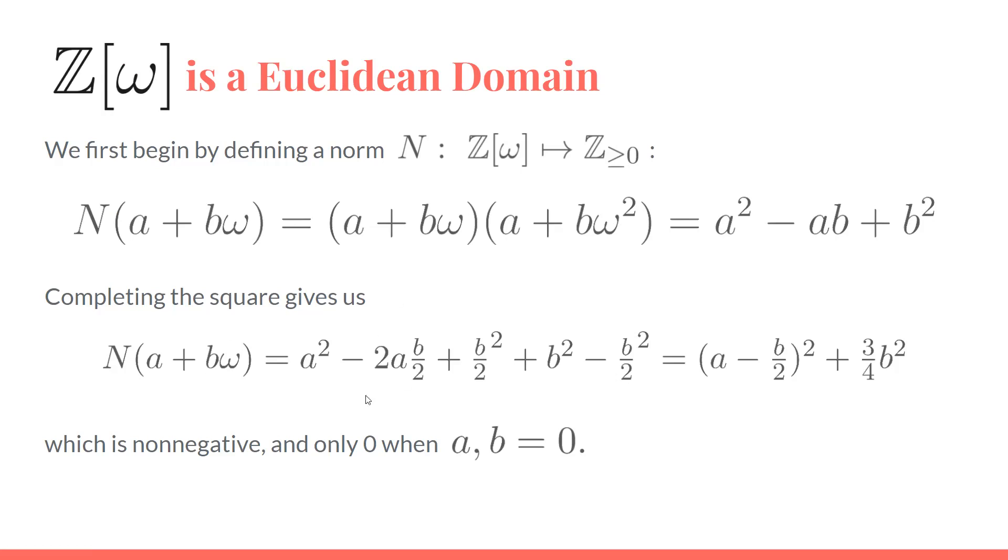Now we just want to show that it's non-negative and only zero when the input is zero. So if we do some algebra, we complete the square. We'll rewrite this number, add and subtract (b/2)², and we end up with this term. Since this is the sum of two squares, it's definitely non-negative, and it can only equal zero when b is zero, and then a has to equal zero. So now we have a norm that only sends zero to zero. Everything else is a positive integer.